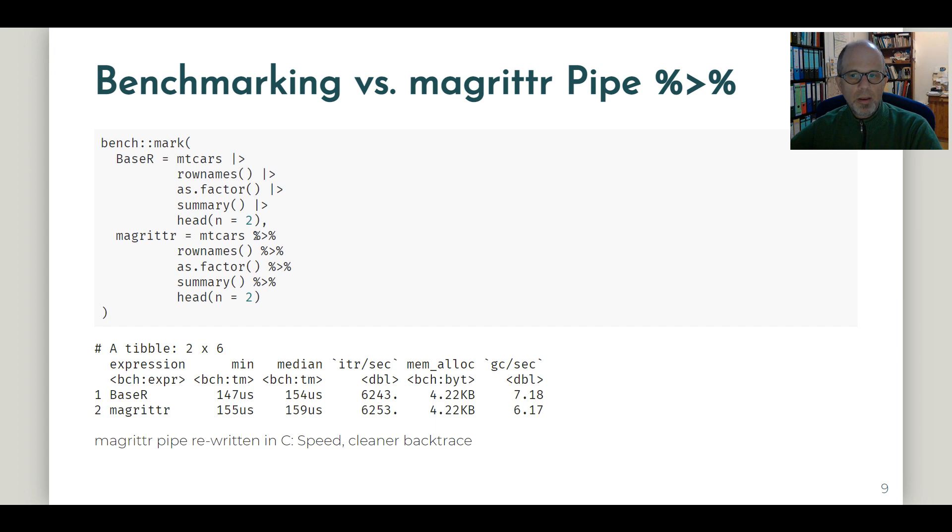Also note that there are some use cases where the Magrittr pipe is more flexible and an implementation using the base R pipe would be more difficult. For example, with the Magrittr pipe, you can refer to the data object that you're piping using the dot notation. And this is useful when the data is not the first argument of the function that you're piping to. And this is not as straightforward to achieve with the base R pipe. It doesn't support this dot notation. Also note that the Magrittr package has a few other pipes. I see them very rarely used. But for some use cases, other types of the pipe may be helpful. So this is also found in the Magrittr package.